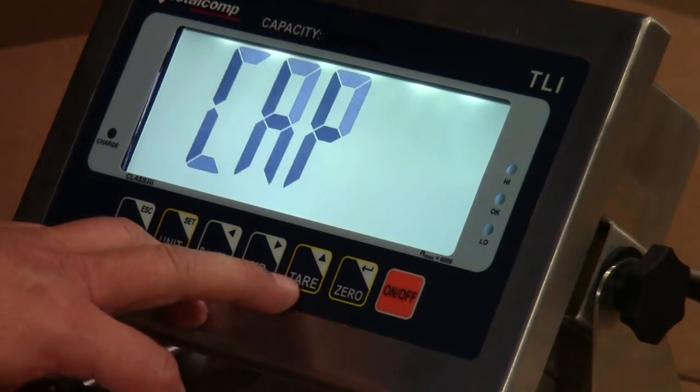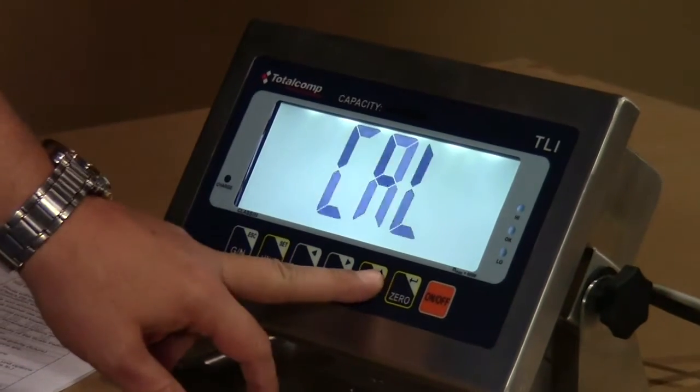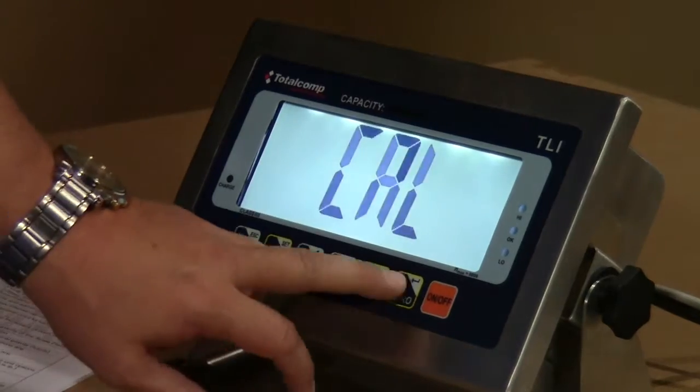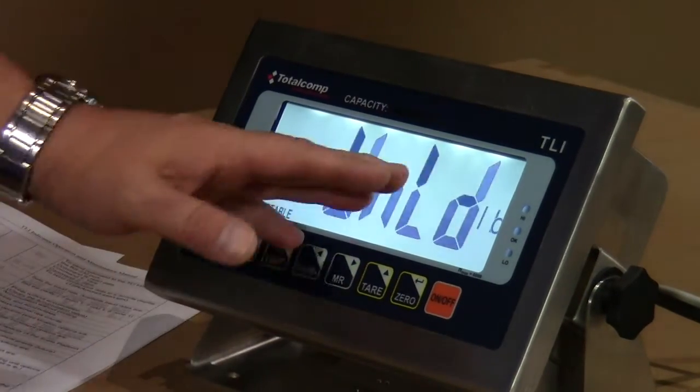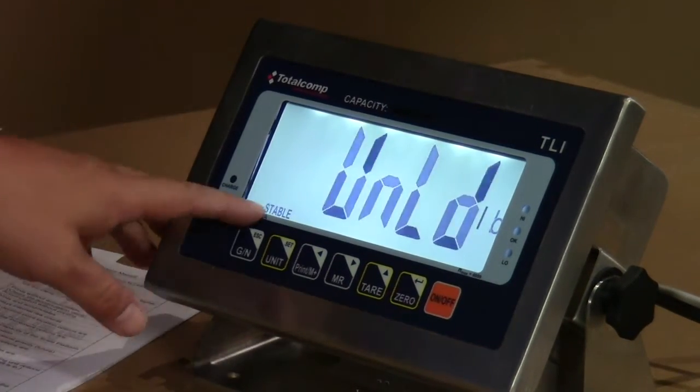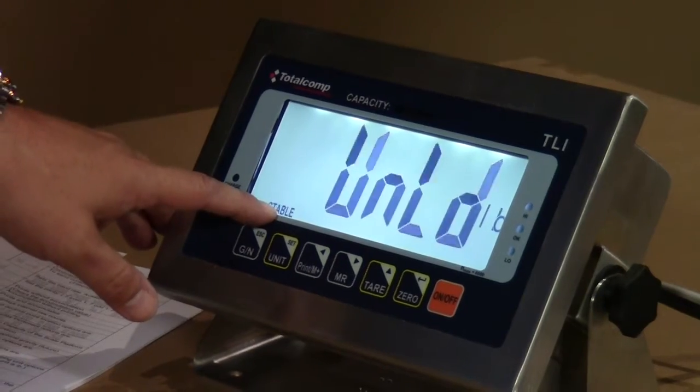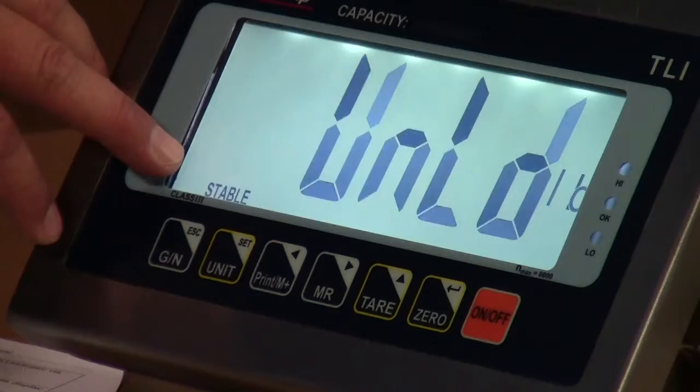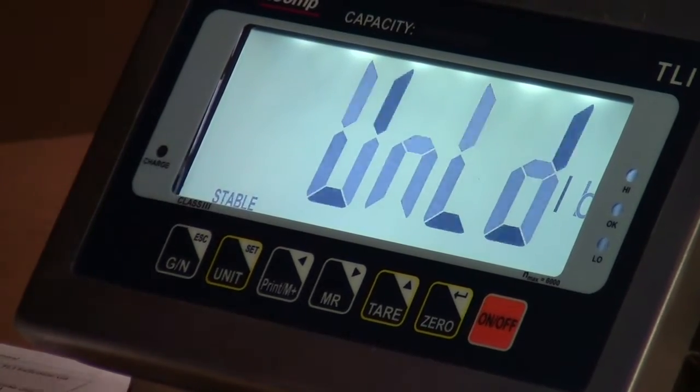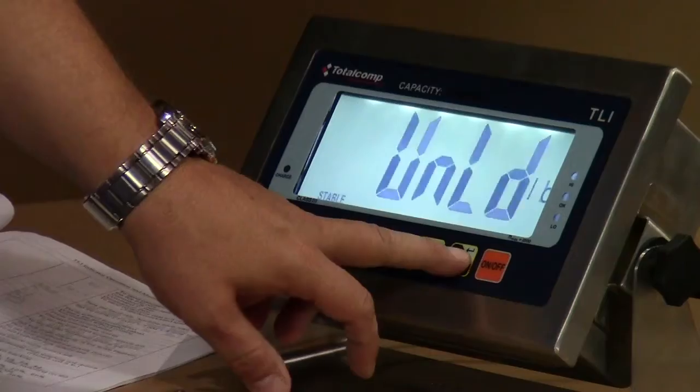Now, next will be calibration. It says calibration, enter. Unload. It tells you to unload the scale. See the little stable light here? Make sure nothing is on the scale, because any movement to the platform, the stable light goes off. Hit enter.